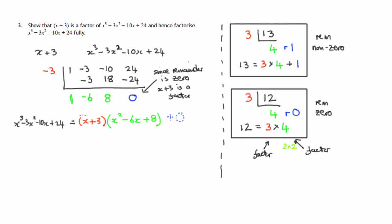Now it says hence factorize this polynomial fully. In the case of 3 times 4, we noticed that 4 could be further factored into prime factors in this case as 2 times 2. So let's go further with this. The x plus 3 is fine, but we can look at the x squared minus 6x plus 8 and attempt to factorize it further.